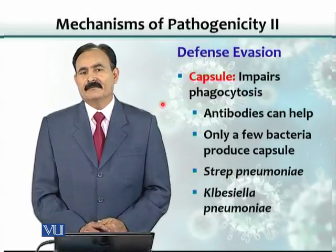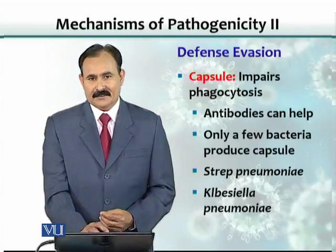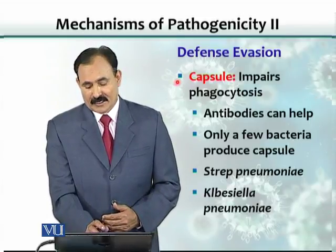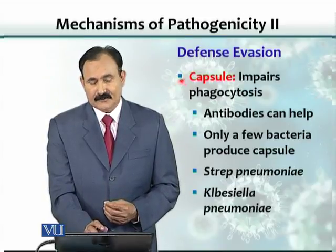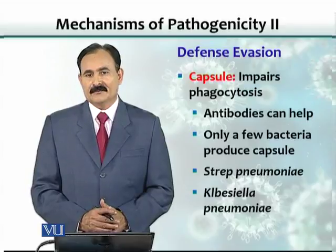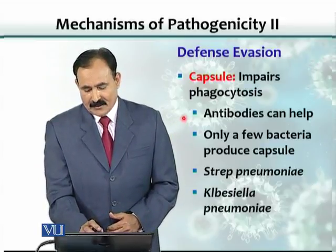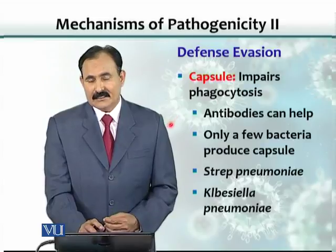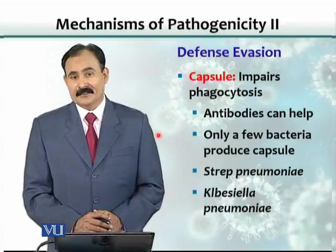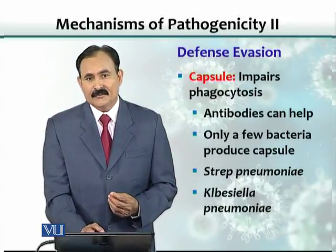The body has immune cells. They try to engulf and eliminate bacteria by eating them. So organisms have evolved various mechanisms that defy phagocytosis. One of those components is called the capsule. The capsule basically impairs phagocytosis — it does not allow the organisms to be swallowed or engulfed by macrophages or neutrophils. Although if the body is able to make antibodies against the capsule, the capsule would not then help the organism evade the immune system.